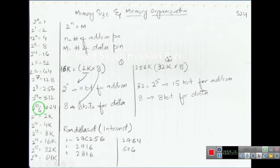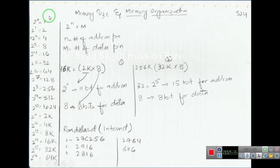If we have 10 address bits, it gives 1K. For 11 bits, it becomes 2K. For 12 bits, it becomes 4K. This is the reference table we will use in the next discussion.